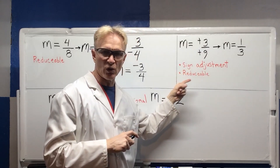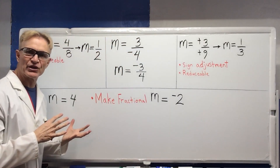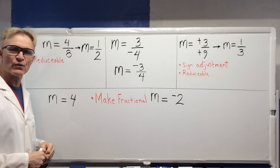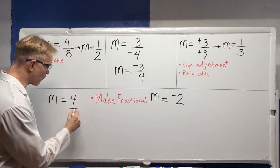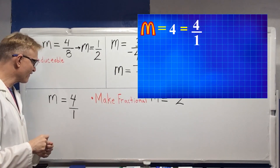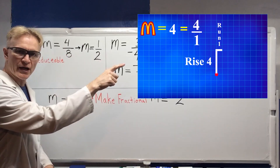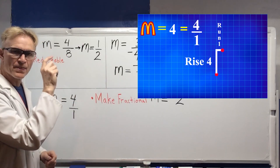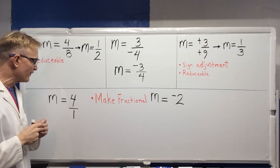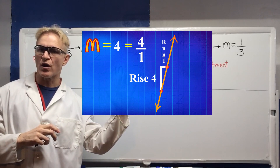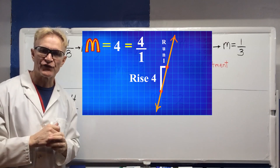The next one to look at is 'make fractional.' What happens when you have a slope and it's M equals four, or they give you the slope right away as M equals four? Simply put it over one, because four over one is still four. Now I know I have a positive slope and I'm going to rise four and run one to the right. Rise upward four, run one to the right, and we land back on the line — two points that are on that line.